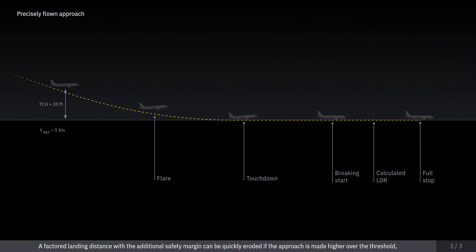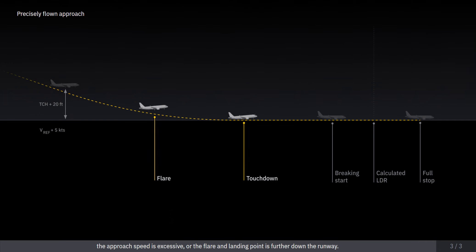A factored landing distance, with the additional safety margin, can be quickly eroded if the approach is made higher over the threshold, the approach speed is excessive, or the flare and landing point is further down the runway. A combination of these factors together will render the landing performance computations useless.